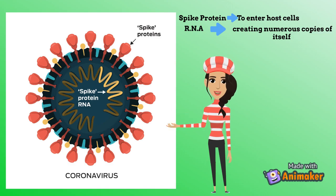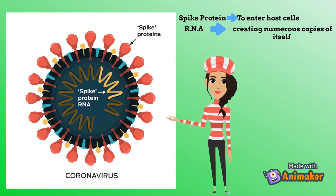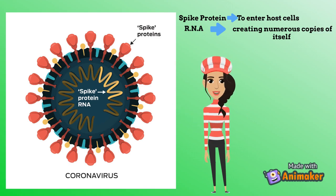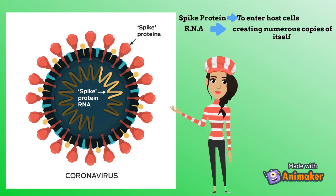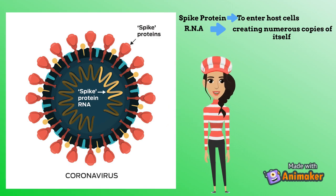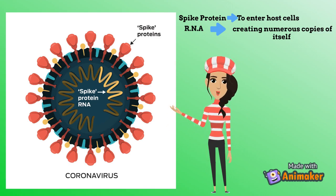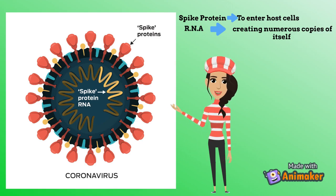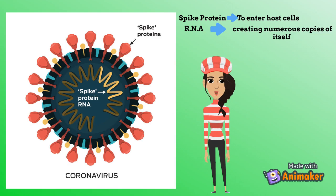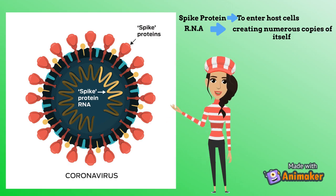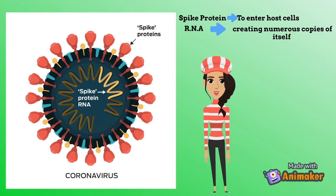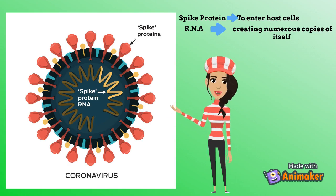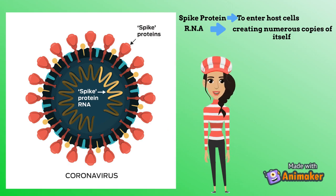Coronaviruses, in specific, are a group of related RNA viruses that can cause diseases in mammals and birds. On the outside of a coronavirus, there is a thing called spike protein. This spike protein helps the virus enter our cells. There is also RNA, which is a genetic material, helping in creating numerous copies of itself — like a photocopy machine that just never stops copying papers.